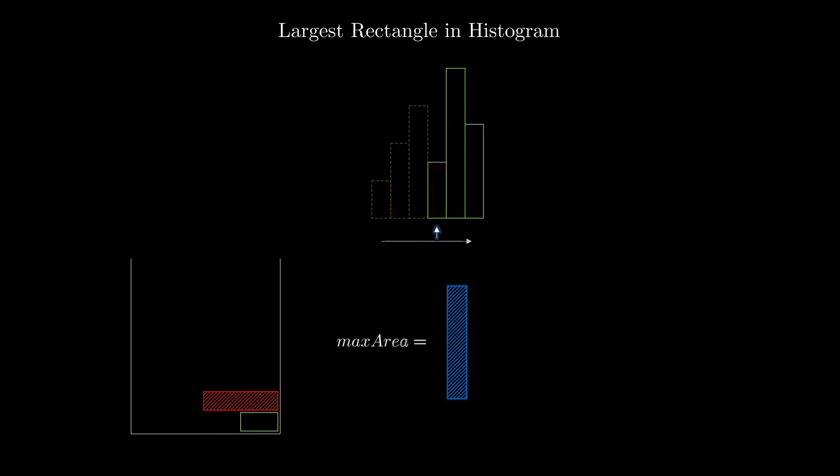Moving ahead, since the new stack top is still greater than the current element, we pop it from stack. For this popped element, the right smaller element is still the current array element which is responsible for kicking it out of the stack. As before, the left smaller element is given by a new stack top element as we have an increasing stack.